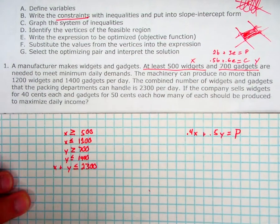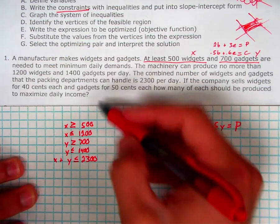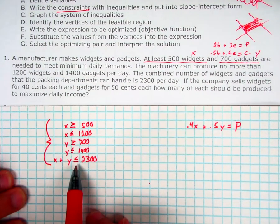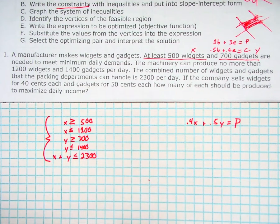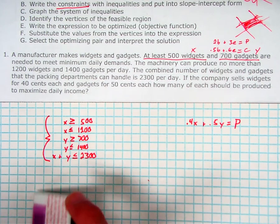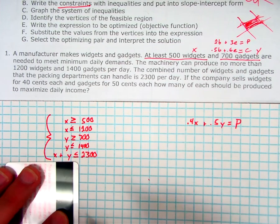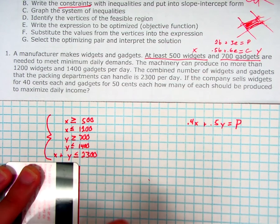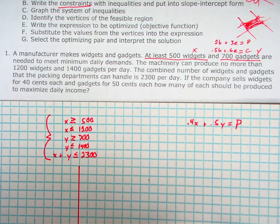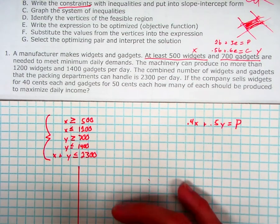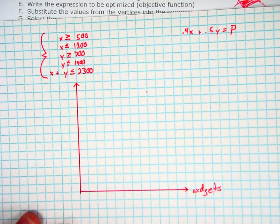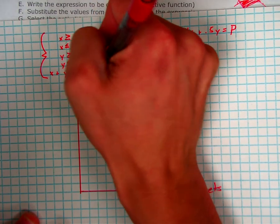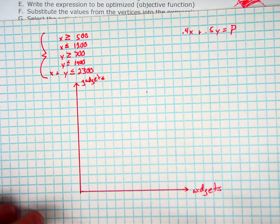Now my objective is to graph the system of inequalities. It looks like we're going all the way up to 2,300, so I don't want a scale that goes up by ones — I'll pick something that goes up by 200s. You also don't want increments of 500 because you want it to be precise enough to find those vertices. The x-axis is the number of widgets and the y-axis is the number of gadgets. I'm going up by 200 on both axes: 200, 400, 800, 1200, 1600, 2000, 2400.